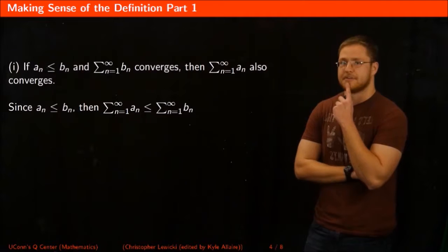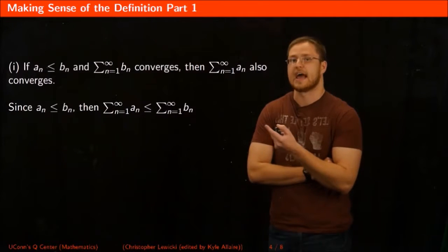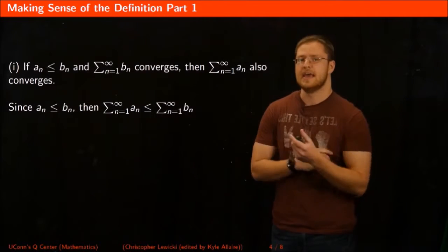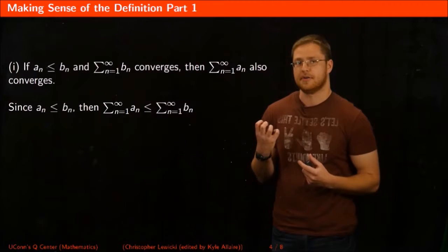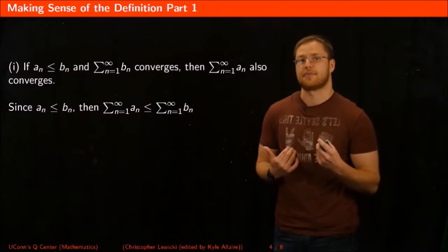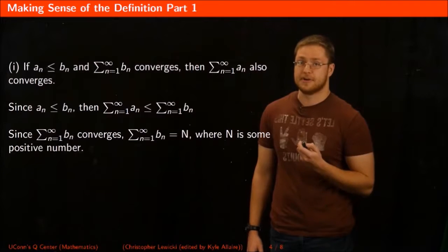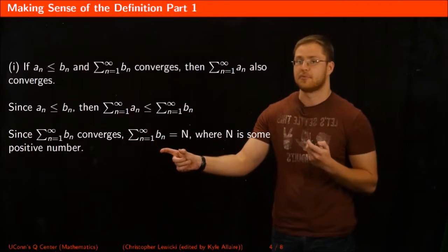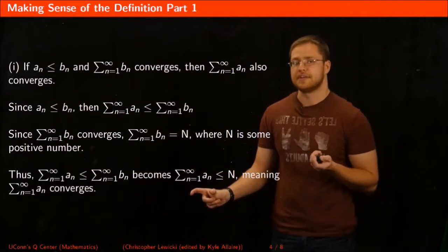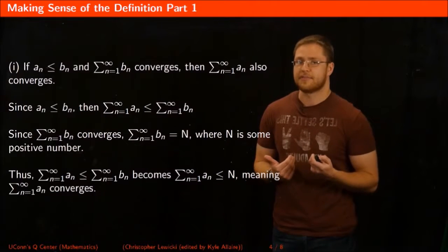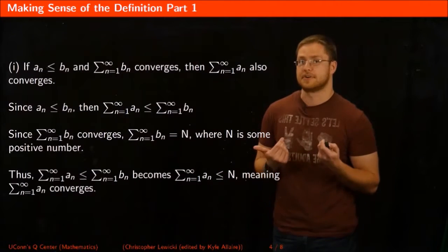Let's reason out why this has to be true. If we know that An is always less than or equal to Bn, it also has to be true that the series of An is less than or equal to the series of Bn. That makes sense intuitively because you're adding a whole bunch of smaller or equal numbers and comparing that to the sum of a whole bunch of bigger or equal numbers. Since we know the series Bn converges, its sum equals some real number N, so the series An is less than or equal to N, meaning it has to converge to some real number.